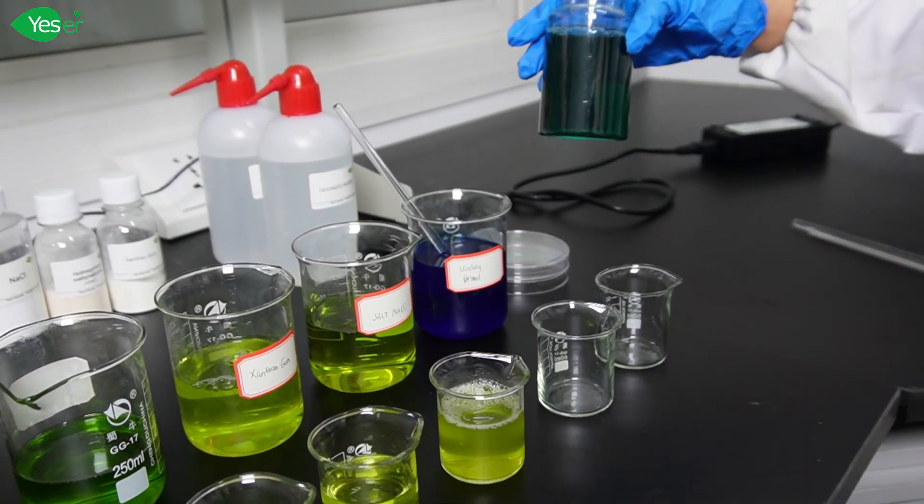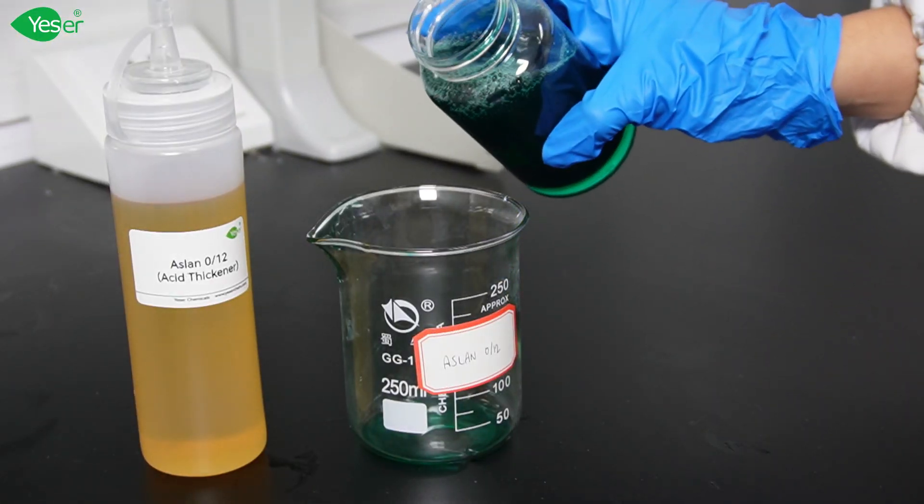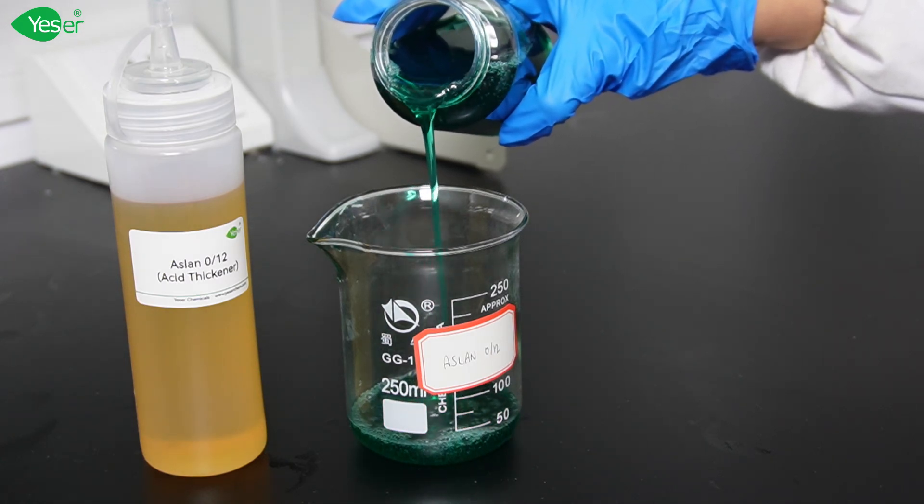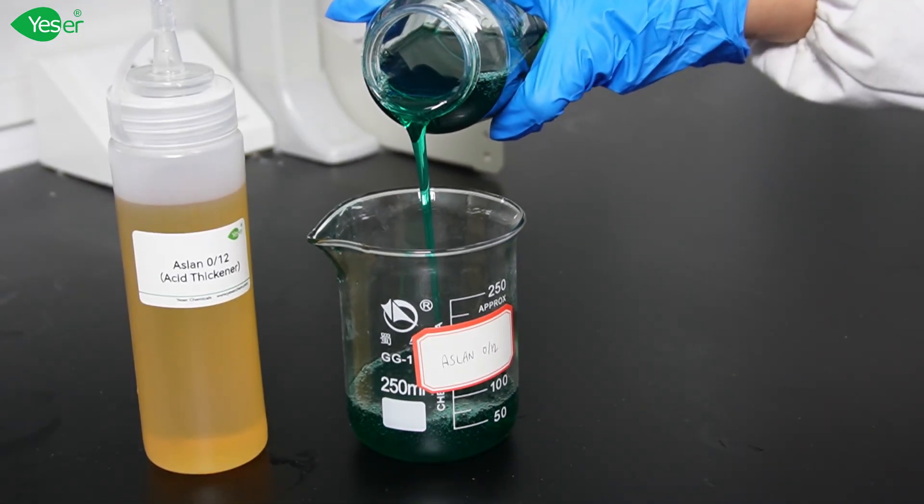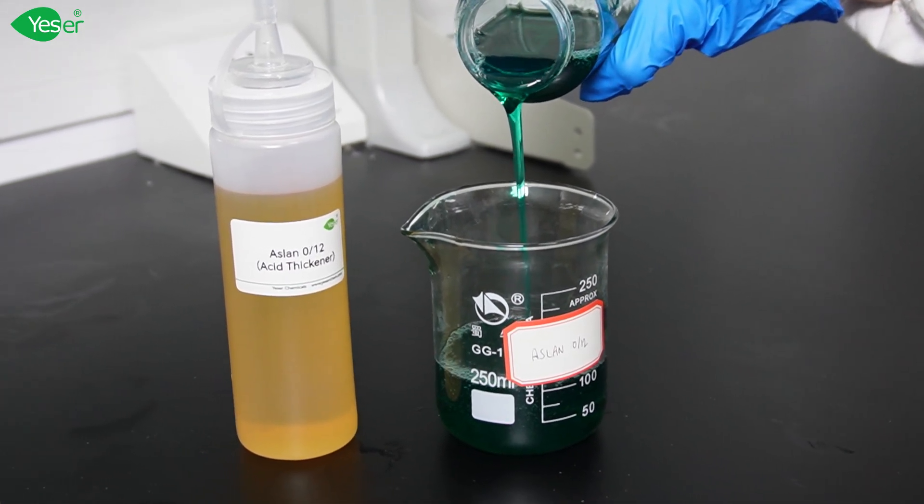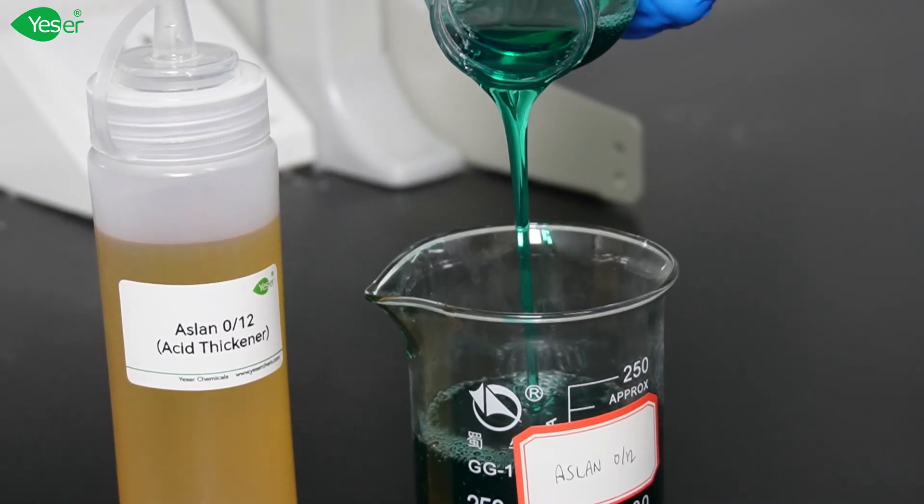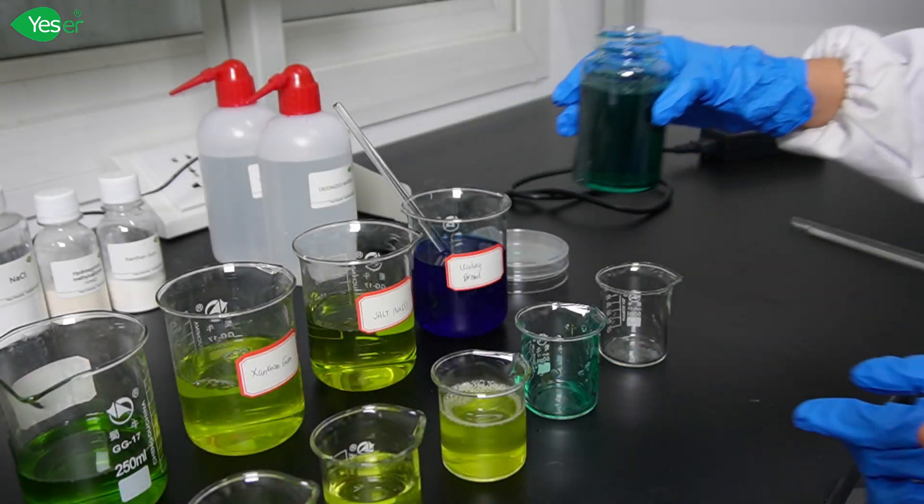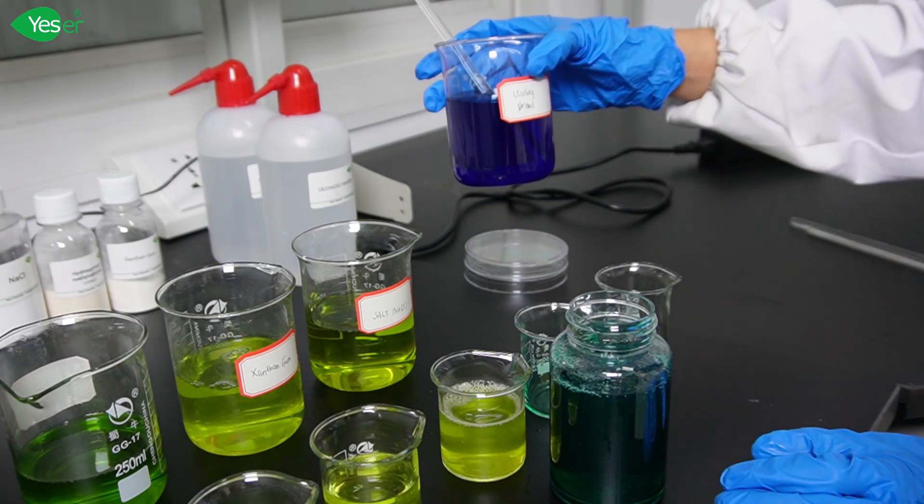Now for the last thickener, using Aslan 012. As you can see, Aslan 012 has a stable, smooth texture as we pour it down the container. This is a desirable attribute for our thickening agent in toilet cleaner formulations. Also, Aslan 012 doesn't form that jelly-like gel consistency or phase separation compared to other thickeners. Now we're going to compare the viscosity of our Aslan 012 with the leading brand toilet cleaner.